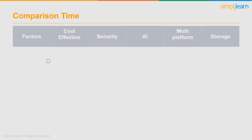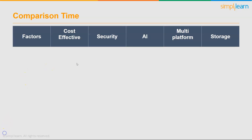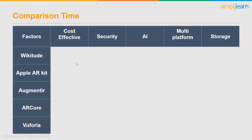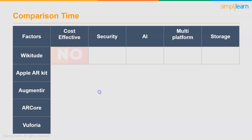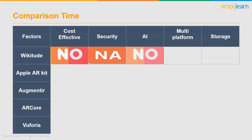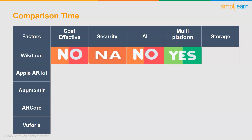Now let's move towards the comparison on the above-mentioned key factors. First, we have Wikitude. Wikitude doesn't meet the criteria of cost effectiveness as it requires membership access to access premium features, with membership fees starting at 2,490 euros. Regarding security features, there is no information available. Wikitude does not use AI; instead it uses SLAM, instant tracking, object and scene recognition, and geolocation-based AR and image recognition. Apps developed with Wikitude support multi-platform access, and Wikitude supports cloud storage.